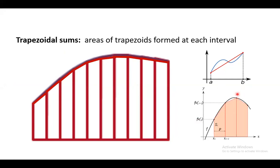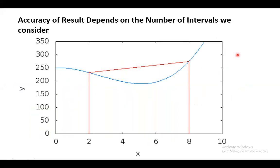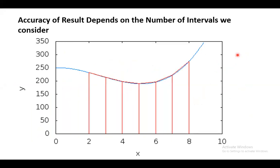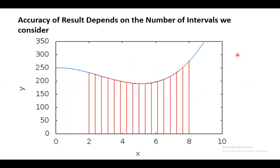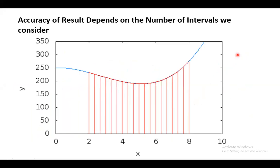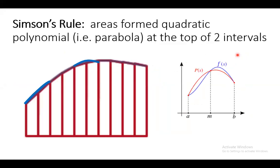These are the trapezoids into which we divide the area. The curve is idealized into a straight line, so each element becomes a trapezoid. The accuracy also depends upon the number of intervals you consider for area calculations.